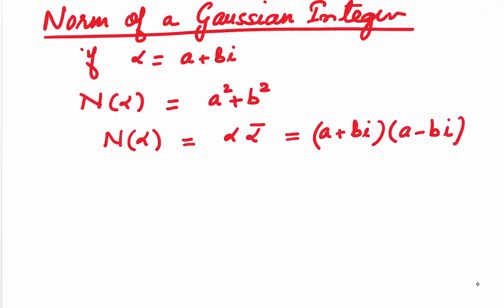Now let us look at an important concept: the norm of a Gaussian integer. Let alpha equal a plus bi be some Gaussian integer. Then N(alpha) denotes its norm, and it equals a squared plus b squared. You are already familiar with the modulus of a complex number, so the norm is nothing but the square of the modulus.